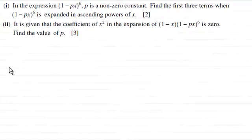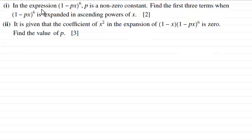Hi there. Now for this question, in the first part, we're given that in the expression of 1 minus px to the power 6, p is a non-zero constant. Find the first three terms when 1 minus px to the power 6 is expanded in ascending powers of x. If you'd like to have a go at this, just give you a moment to pause the video.